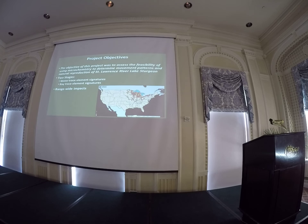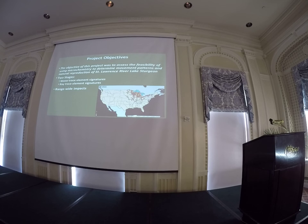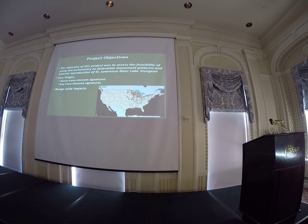When doing this type of analysis, there are really two things you have to look for. First, you have to determine if there's a difference in trace elemental profiles within different water systems. And then secondly, you have to determine if those differences are observable in the aging structures.